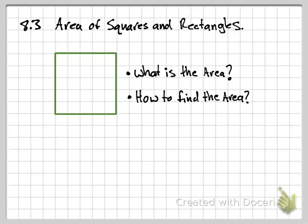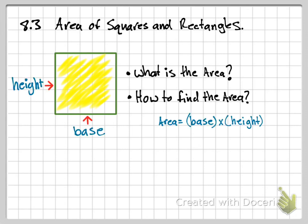This lesson is on area of squares and rectangles. We'll first start off by defining what area is — the area is simply the amount of space inside a rectangle. To find the area, we use the formula: area equals base times height, where the base is the side on the bottom and the height is the side on the side.